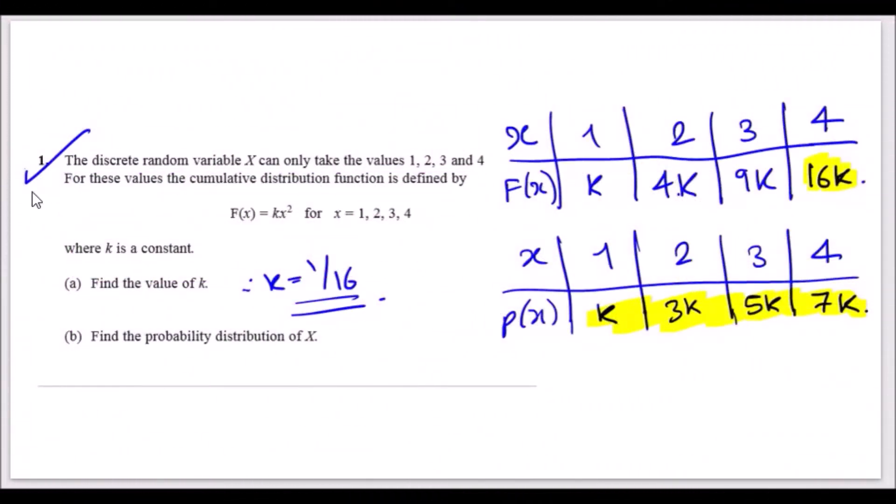So let's have a look. Number one: the discrete random variable X can only take the values 1, 2, 3, and 4. For this one, the cumulative distribution function is defined by the following.